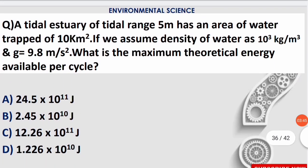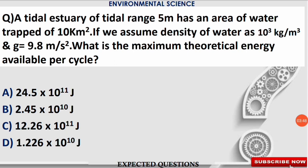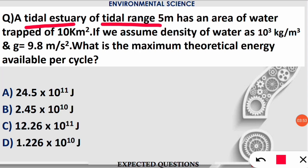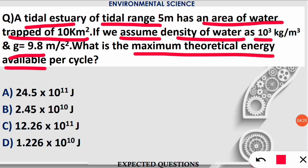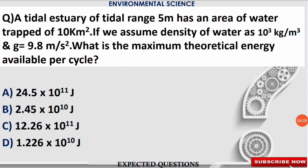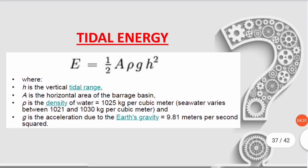Let's move on to one more numerical from the energy and environment chapter. The next question is: a tidal estuary of tidal range 5 meters has an area of water trapped of 10 kilometer square. The density of water is given as 10³ kg per meter cube, and g, the acceleration due to gravity, is 9.8 m/s². Find the maximum theoretical energy available per cycle.